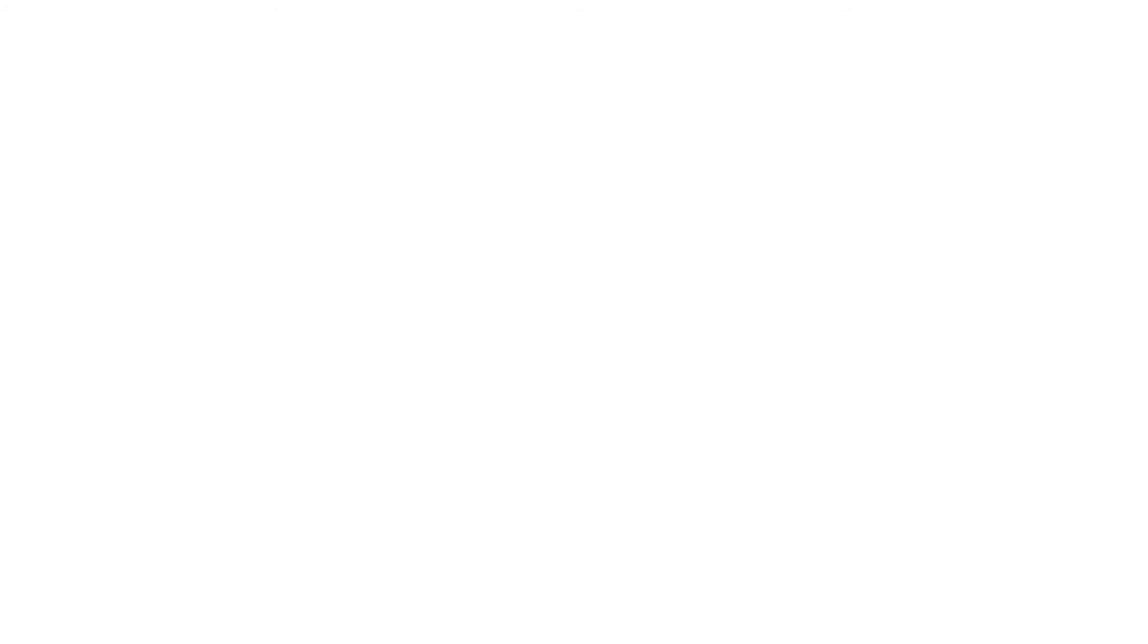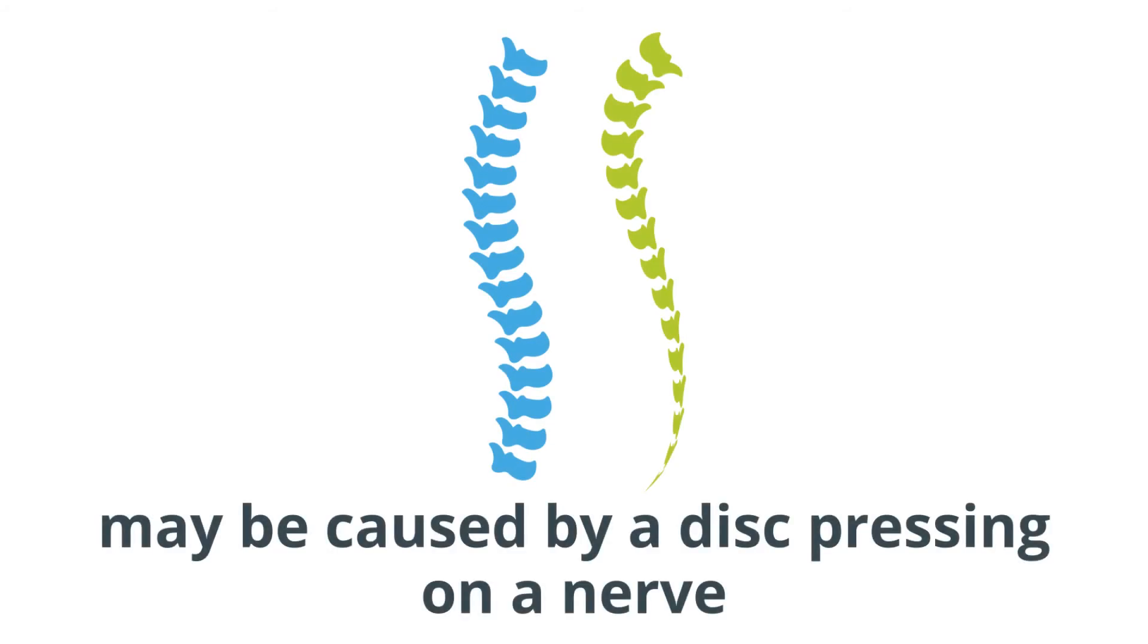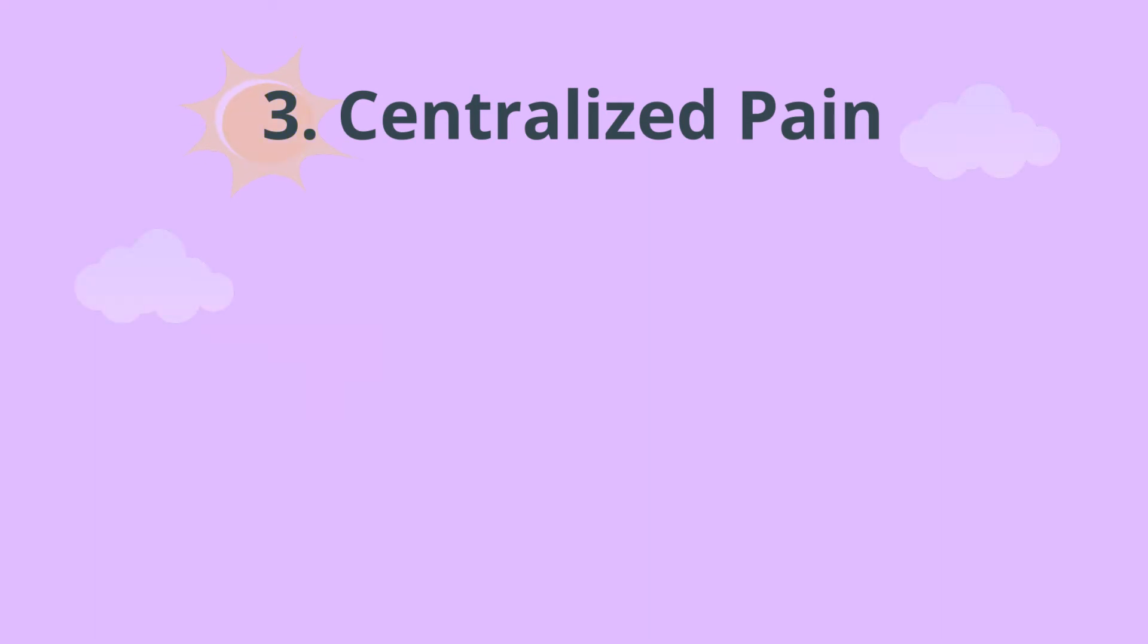For example, lower back pain may be caused by a disc pressing on a nerve. The third type of pain is centralized pain, which occurs when there is a problem with how the brain and spinal cord function.